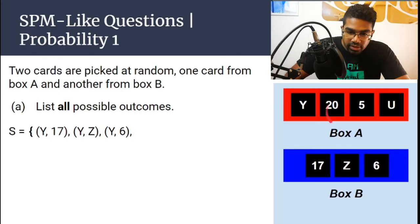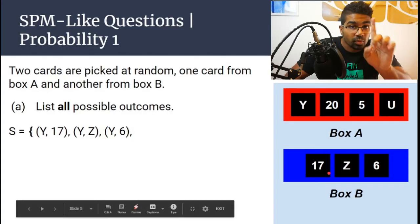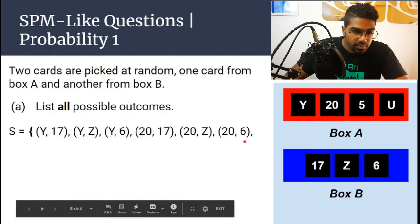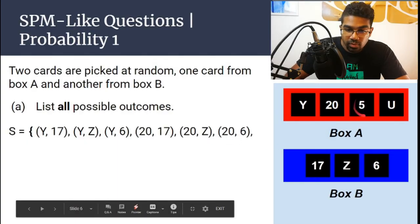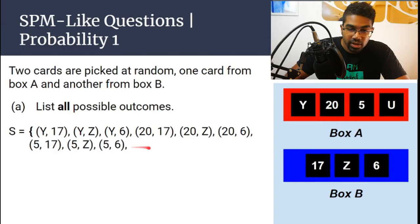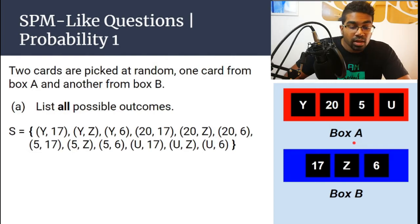Then we go on to 20 and do the same thing: 20,17 — that's one event — then 20,Z and 20,6. Same thing with 5 and U — so 5 gives another 3 outcomes, and U gives another 3. When you do it systematically, you won't miss anything.